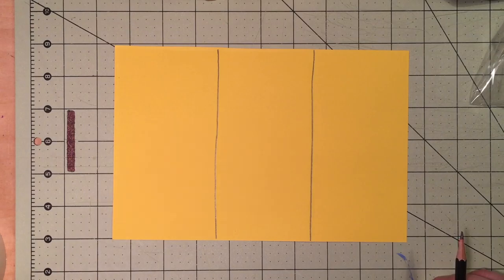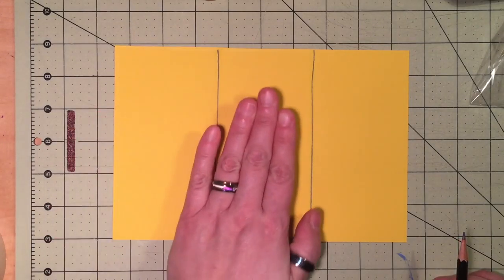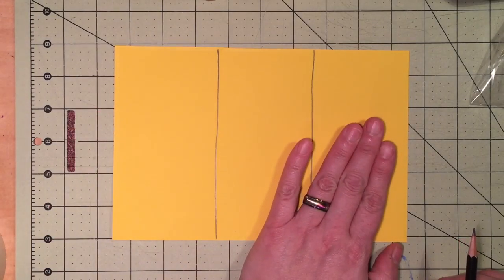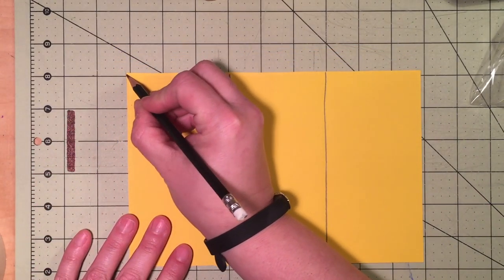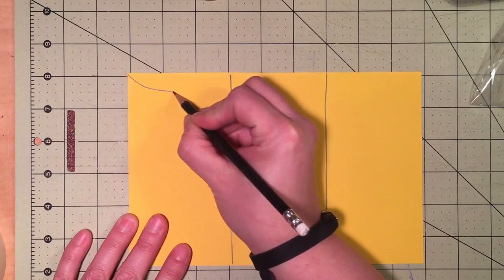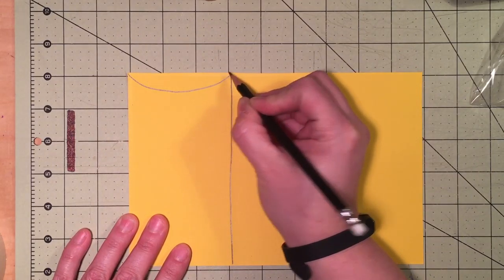All right, so to start that off, each one of these is going to represent our golden tube. So each one of these needs to have that rounded top. So from corner to corner, draw a letter U.